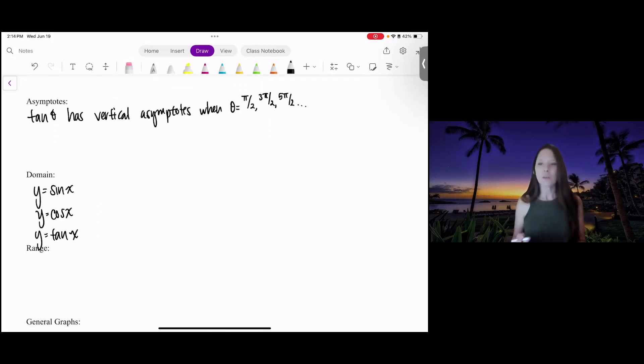For the functions y equals sine of x, y equals cosine of x, and y equals tangent of x, sine and cosine are going to take on all of the values of x, but tangent is not. I can say the real numbers for sine and cosine, but not for tangent.